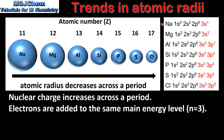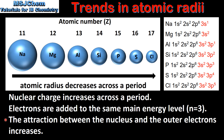Here we have the electron configurations for sodium to chlorine. As we go across a period, the electrons are being added to the same main energy level, which is N equals 3. So for these two reasons, the attraction between the nucleus and the outer electrons increases, therefore the atomic radius decreases across a period.